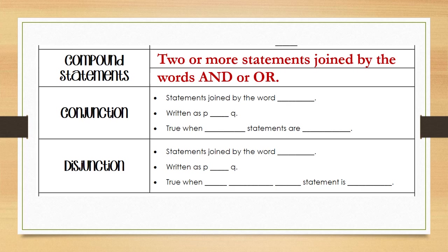Compound statements are two or more statements joined by the words 'and' or 'or.' A conjunction is a statement joined by the word 'and' — the symbol for 'and' is an upside-down v. A conjunction is true only when both statements are true; if any statement is false, the conjunction is false. A disjunction is a statement joined by the word 'or' — the symbol is a regular v — and it's true when at least one of the statements is true.